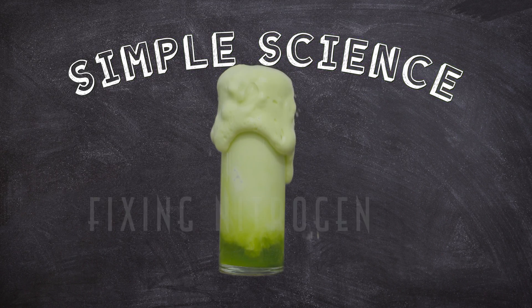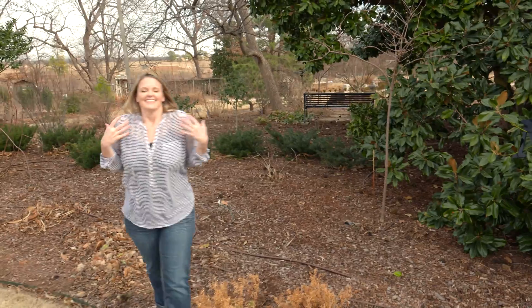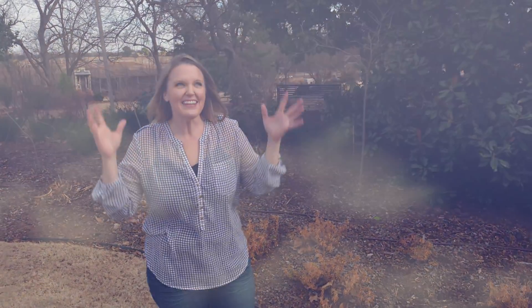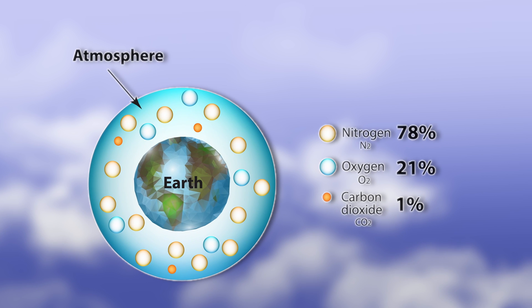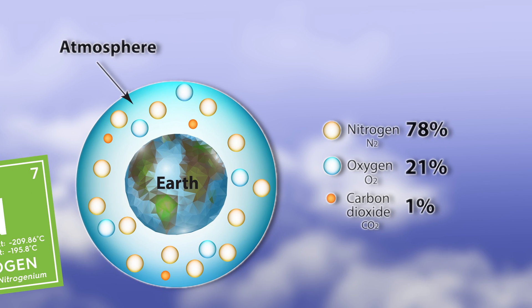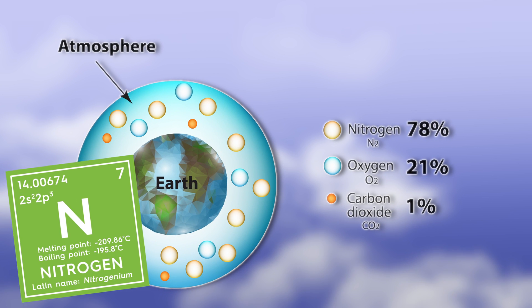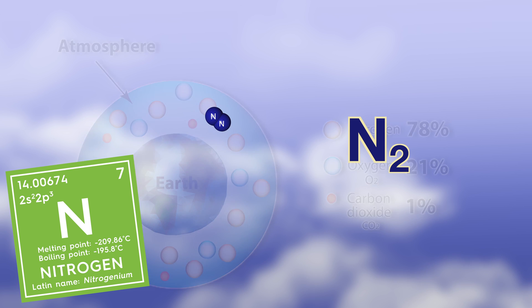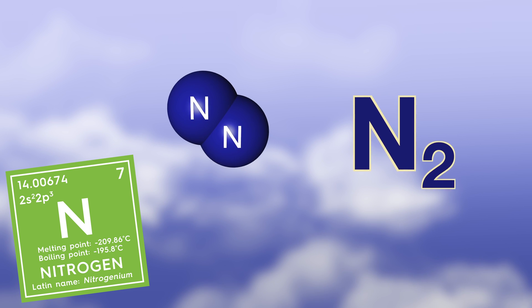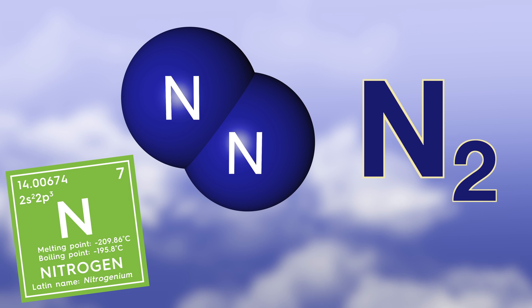The Simple Science of Fixing Nitrogen. Take a deep breath. You know that 78% of the air that we're breathing is actually made up of nitrogen — that same nitrogen that we're so often talking about putting on our plants. The problem is that the nitrogen in the air is a tightly bound molecule of N2, and this molecule of nitrogen is not usable by plants.